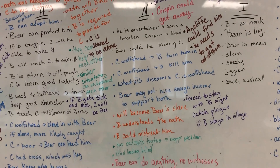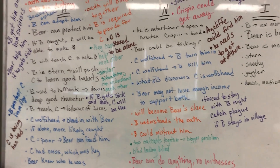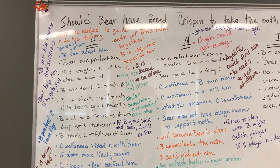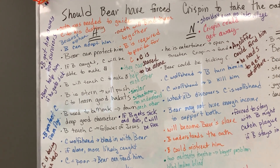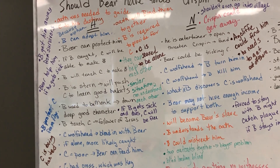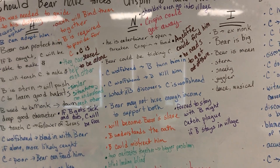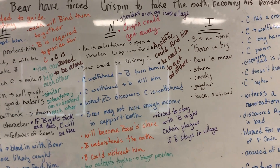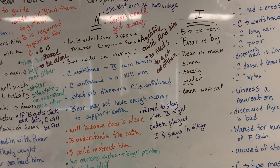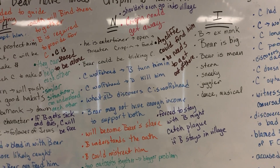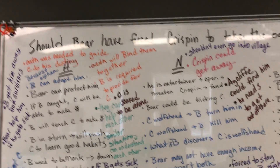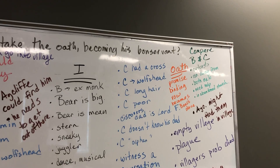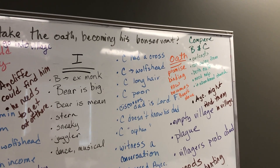Can I talk to you guys for a short minute about five common topics and using those? I know there's been a lot of questions about how do we come up with stuff for the interesting. So we listed our five common topics and we only today talked about definition, comparison, and then we introduced circumstance. So we have this issue: should Bear have forced Crispin to take the oath, becoming his bondservant?